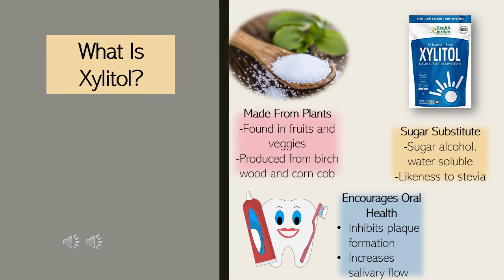Xylitol can also be found in fruits and vegetables and naturally occurs in the human body in small amounts. Like other sweeteners, it can increase salivary flow, which in turn reduces the amount of Streptococcus mutans, a bacteria that is able to cause cavities with the possibility of leading to gum disease. Xylitol is unique in the sense that it is non-fermentable by our oral bacteria, the same bacteria that causes decay.